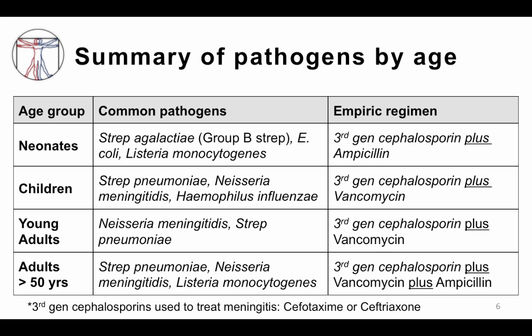For children, we're worried about strep pneumo, H. flu, and Neisseria meningitidis. A third generation cephalosporin covers Neisseria and H. flu, and the combination of a cephalosporin plus vancomycin is used empirically for strep pneumo. For young adults, primarily worried about Neisseria meningitidis and strep pneumo, a third generation cephalosporin plus vancomycin is recommended. For adults over 50, Listeria monocytogenes becomes common enough that we change the empiric regimen to a third generation cephalosporin plus vancomycin plus ampicillin to cover Listeria.